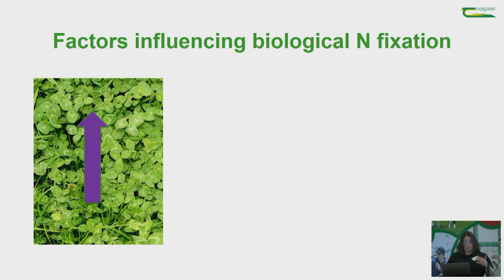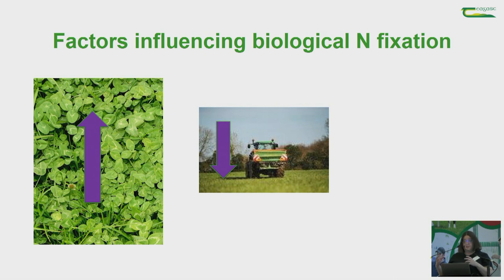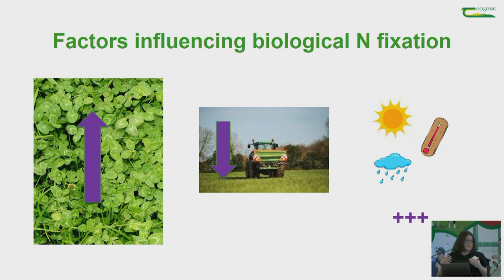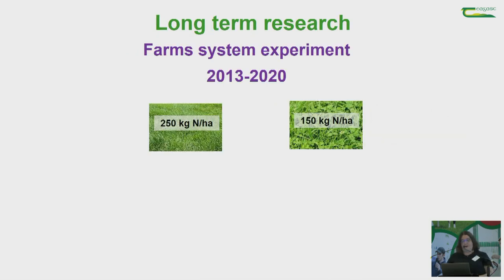What influences how much fixation we get? Clover content is really important — you need good clover content to get fixation. Too much fertilizer nitrogen will reduce fixation because it takes a lot of energy for the plant to fix nitrogen; if there's plenty of nitrogen available in the soil, the clover gets 'lazy' and stops supporting the bacteria. Finally, weather conditions matter: sunshine hours provide energy via photosynthesis, and the bacteria also needs warm temperatures and moisture to fix nitrogen.